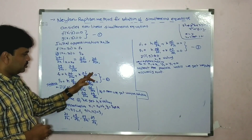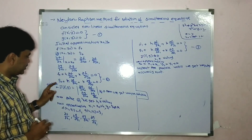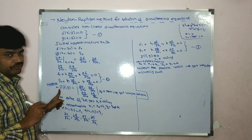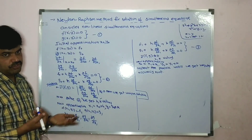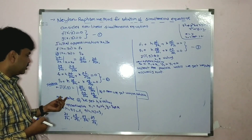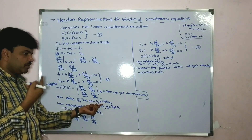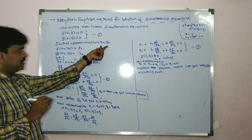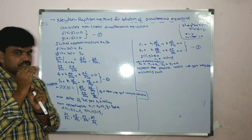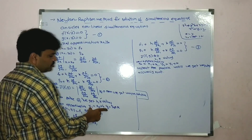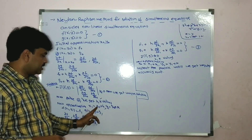Here we have: f0 plus h into ∂f/∂x₀ plus k into ∂f/∂y₀ equal to zero, and g0 plus h into ∂g/∂x₀ plus k into ∂g/∂y₀ equal to zero. Before solving these equations, check the condition: Jacobian of f comma g must always not equal to zero. You can only get a unique solution; otherwise no solution. Then solve the two equations to get h and k values.